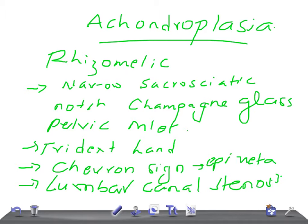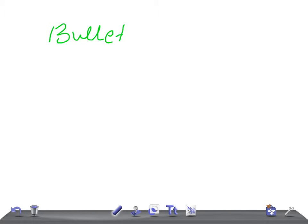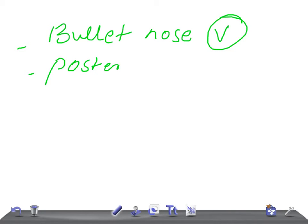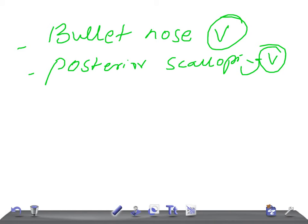Then there is bullet nose vertebra, posterior scalloping of the vertebra, and small sella can also be seen.